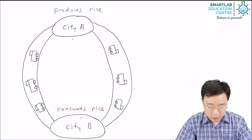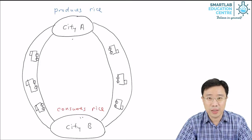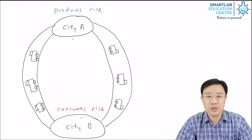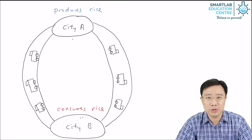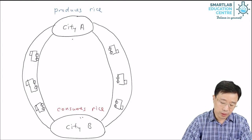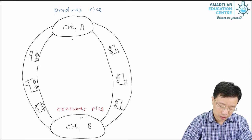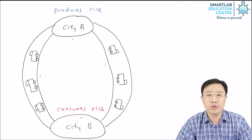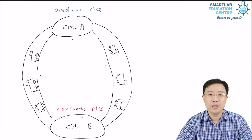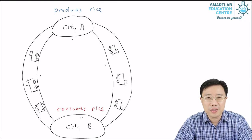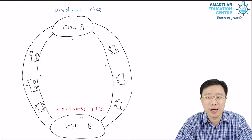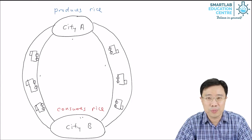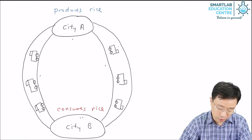So it is very natural for City A to sell its rice to City B. Now how does the rice from City A go to City B? There have to be roads connecting the two cities as shown in this picture. Now the roads are not enough. The rice from City A cannot fly to City B by itself. So you need vehicles to transport them. For example, the trucks I drew here.